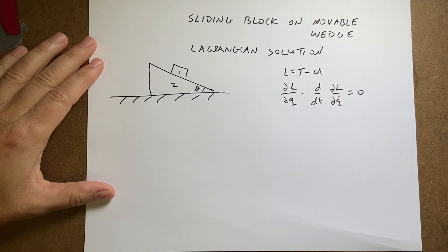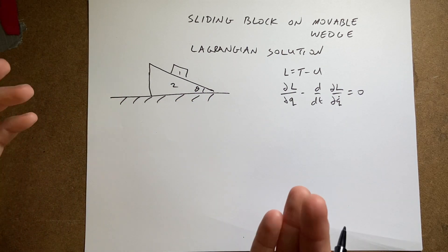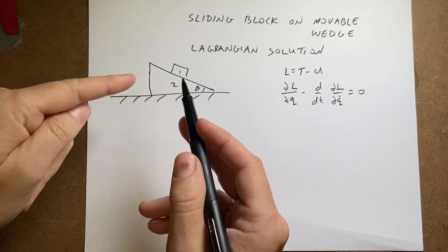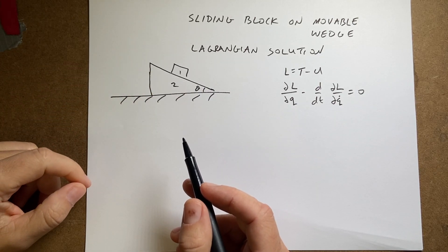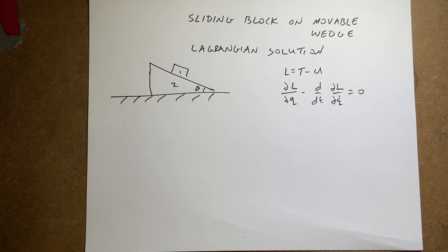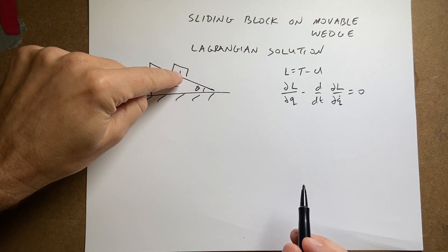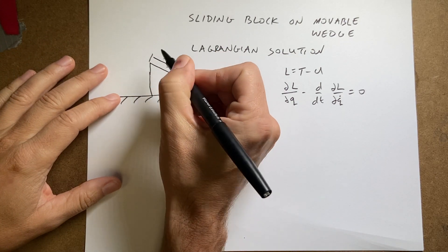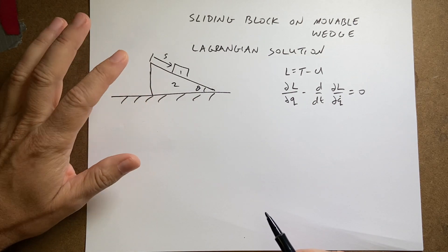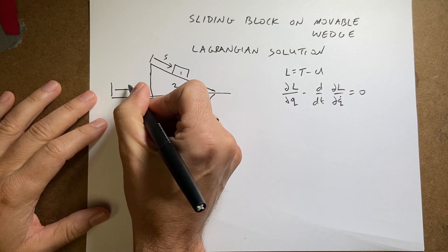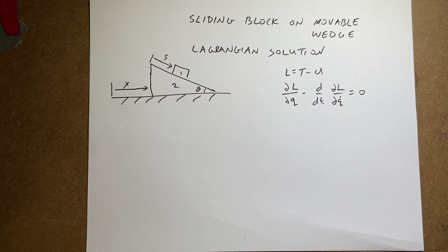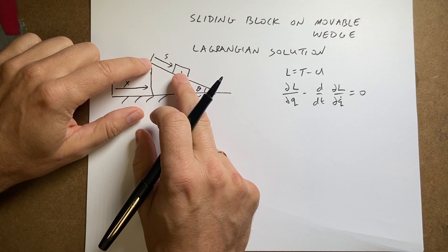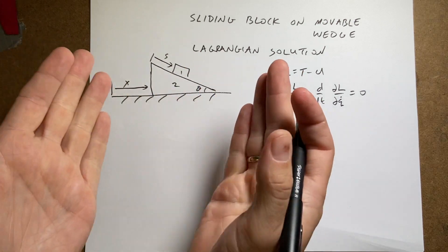We need to think about how many degrees of freedom we have — how many variables are needed to completely describe the situation. The answer is two. They can be any variables I want. I don't need the x and y coordinate of the block separately. I'll use x for the position of the wedge, and s for the distance the block travels down the wedge. If you know those two values, you can reproduce the whole situation.